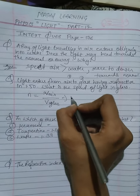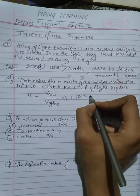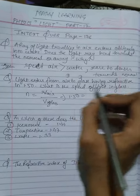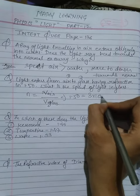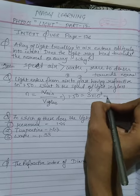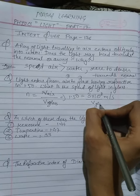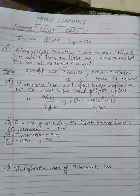The refractive index is 1.50. The speed of light in air is also given in the question: 3 × 10⁸ meters per second.